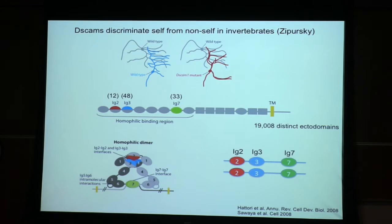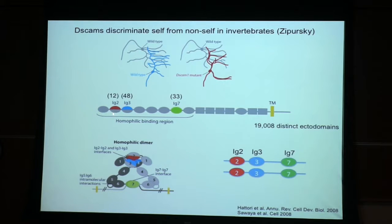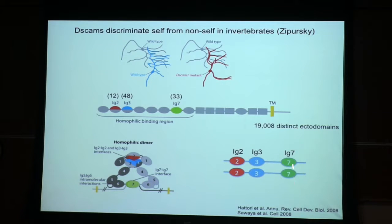In the case of D-scams, the proteins have three domains which are alternatively spliced: IG2, IG3, and IG7. We know the structures of these proteins from David Eisenberg's lab. Basically IG2 binds to 2, 3 to 3, 7 to 7. There are 12, 48, and 33 splice forms. If you multiply out all the possibilities, you get 19,000 distinct proteins.